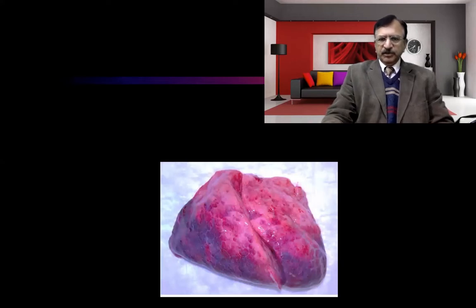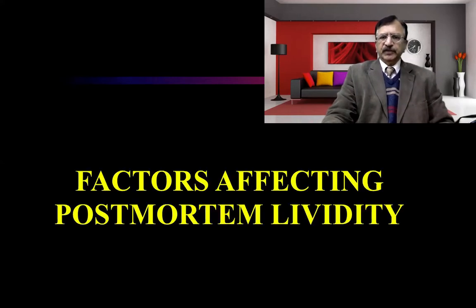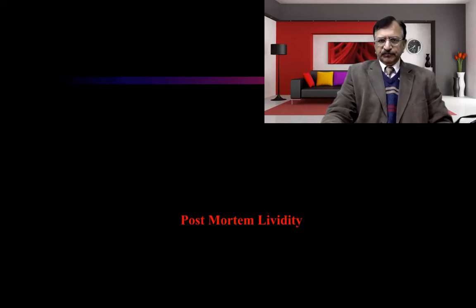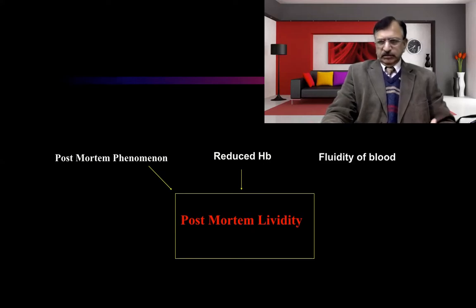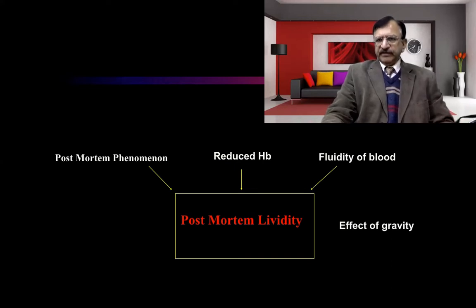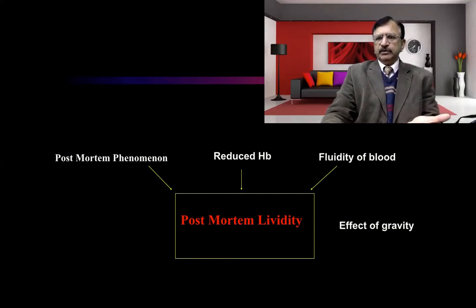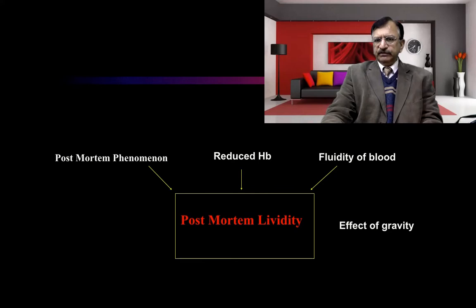This is the diagram showing the posterior surface of the lungs where hypostasis is present. Regarding factors affecting post-mortem lividity: post-mortem lividity is a post-mortem phenomenon. After death, hemoglobin is reduced because there is no oxygenation and no pumping of blood. Because of the fluidity of blood in the initial few hours, it is in fluid form and flows to the dependent regions due to the effect of gravity.